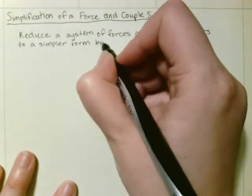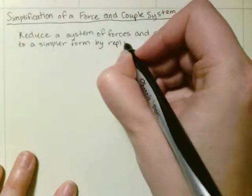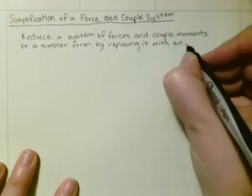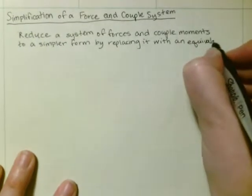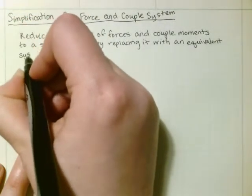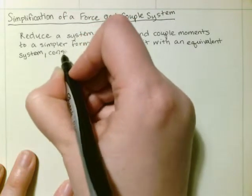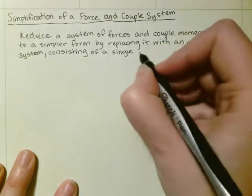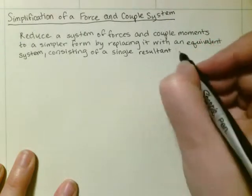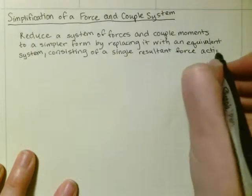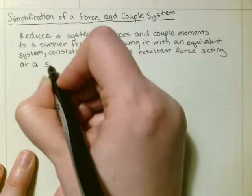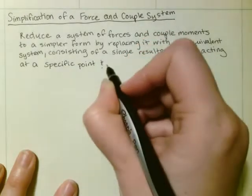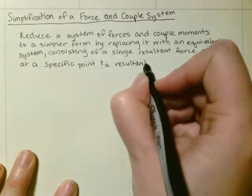The equivalent system consists of a single resultant force acting at a specific point and a resultant couple moment.